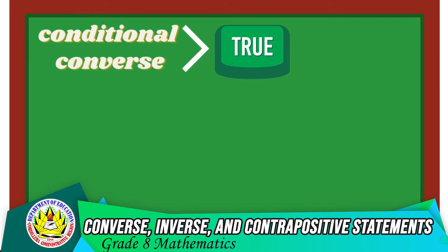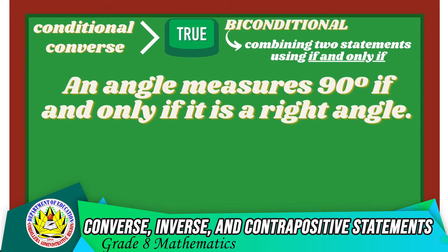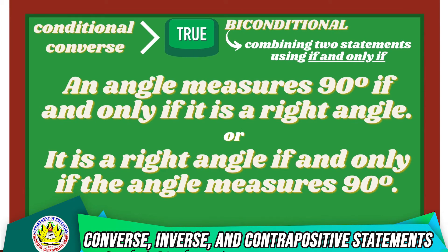Furthermore, when the conditional and its converse are both true, the two statements can be combined to form a biconditional statement, using the phrase 'if and only if.' In the given example, we have: 'An angle measures 90 degrees if and only if it is a right angle,' or equivalently, 'It is a right angle if and only if the angle measures 90 degrees.'